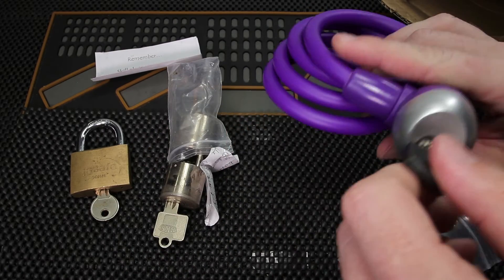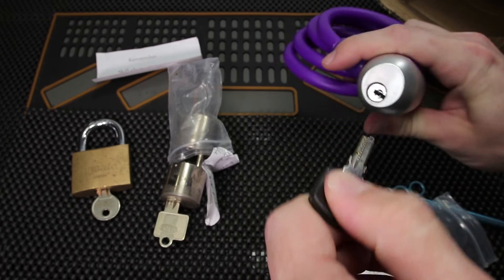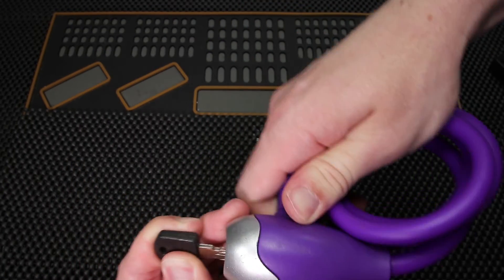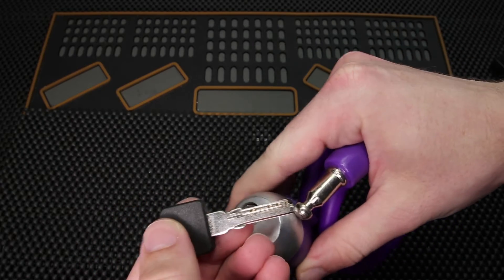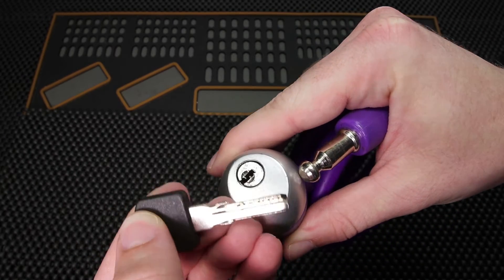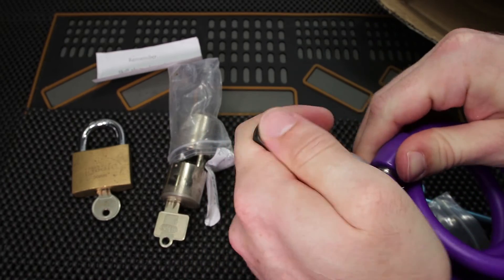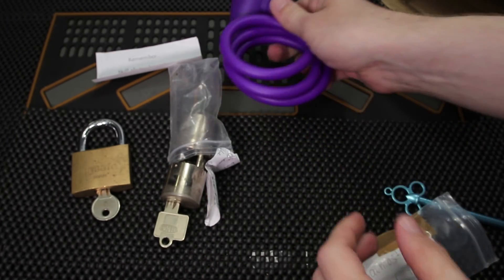Then we have a bike lock. Looks like a dimple lock. That's pretty cool. That will be fun to work on. Thank you.